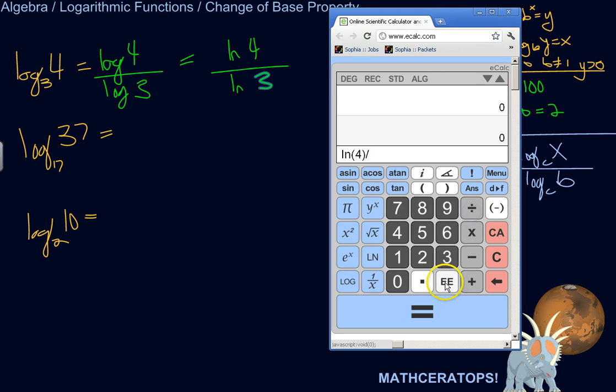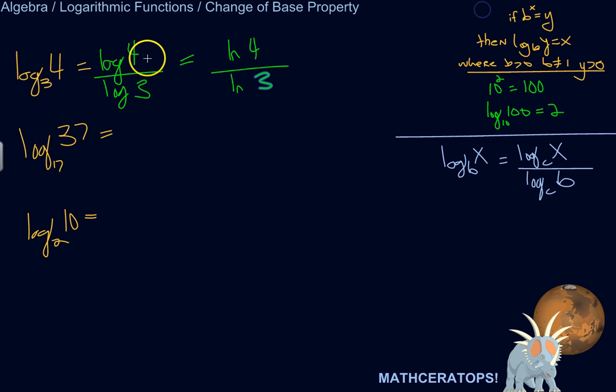So natural log of 4 over natural log of 3, 1.26 something. All right, so it just makes the calculation easier.